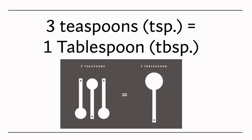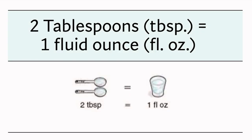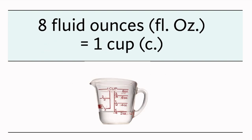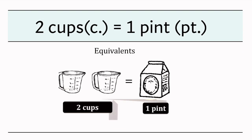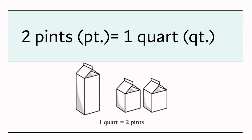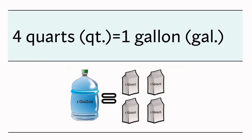Three teaspoons equal one tablespoon. Two tablespoons equal one fluid ounce. Eight fluid ounces equal one cup. Two cups equal one pint. Two pints equal one quart. Four quarts equal one gallon.